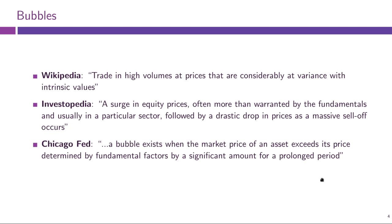All three definitions share a common denominator: prices deviate from fundamental values. None of them include the behavioral aspect — none of them talk about how traders actually behave in these markets. It's quite often the case that there is very asymmetric behavior: everyone wants to buy, nobody wants to sell, so there is very negative aggregate supply of the asset. This is the aspect we will be focusing on in our first class of models.